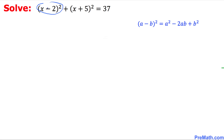The square part (x minus 2) squared, and we're going to expand it by using this fact: (a minus b) squared equals a squared minus 2ab plus b squared. So it is going to become x squared minus 4x, and 2 squared is going to become positive 4.